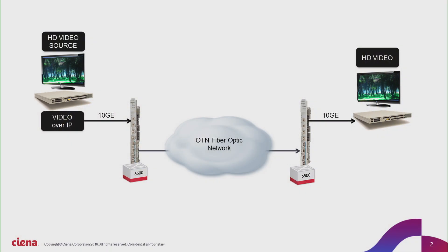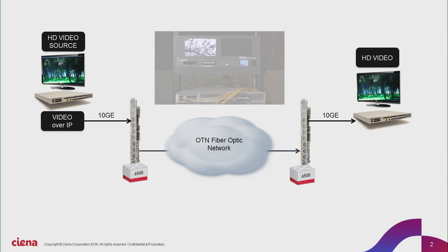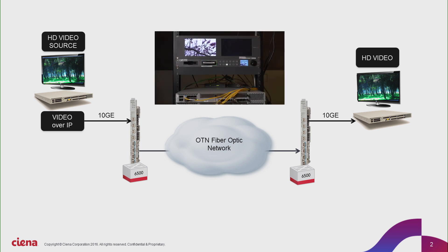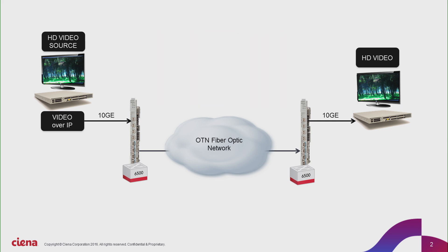What we will demonstrate today is using a very conventional standard optical network system where we have a video source where the video is mapped and encoded over a 10 gigabit Ethernet signal, similar to a signal that would be coming off a standard router, and that Ethernet signal going across an OTN fiber optic network and being decoded at the other end with the video being recovered.